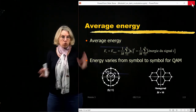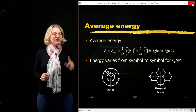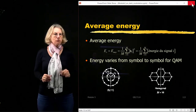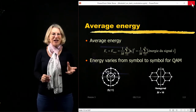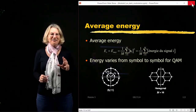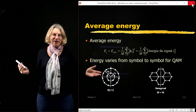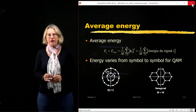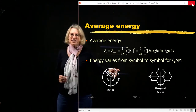For QAM, the first thing we know is that the energy varies from one symbol to another. It's only QPSK — which is a version of rectangular QAM — that has equal energy. So, for instance, look at this: we have two concentric rings with different points along each ring.